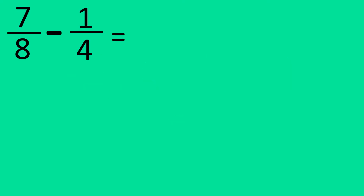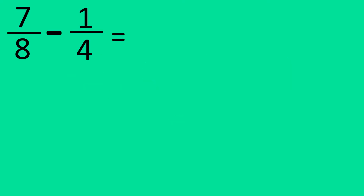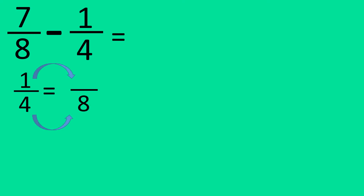Question number one. Seven over eight minus one quarter. We need the same denominator for this question, so we're going to have to turn one quarter into something else. We need the denominator to be eight, so we need to find out what you can do to four to turn it into eight. You can times four by two to get eight.